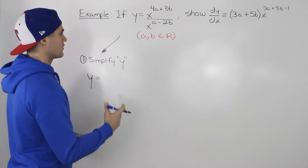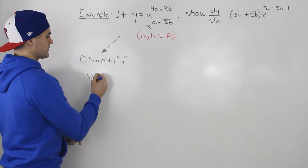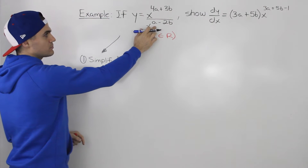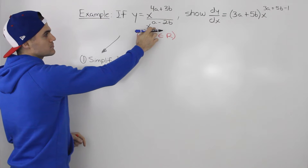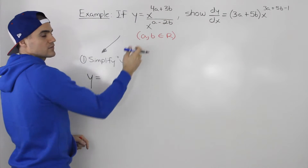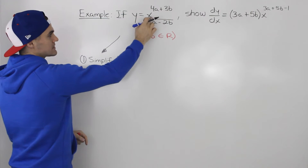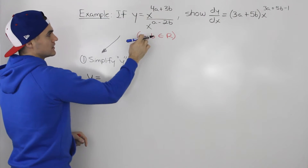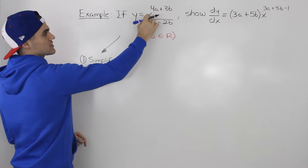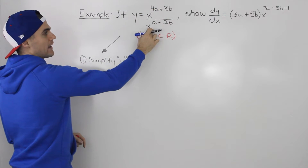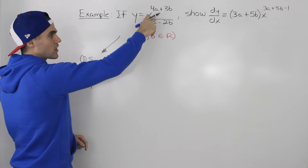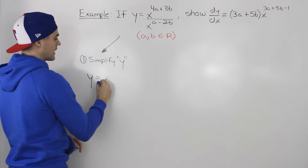The first way — the quicker way — is that we can just simplify y. Notice how we have two exponents with the same base x. So when we have x to the power of something divided by x to the power of something, we can just subtract those exponents.